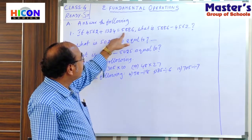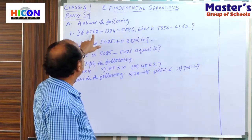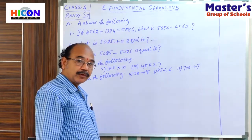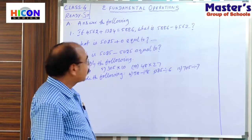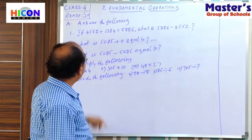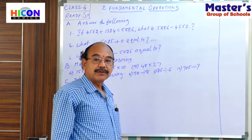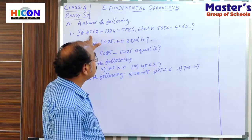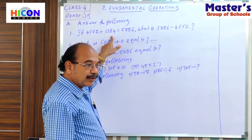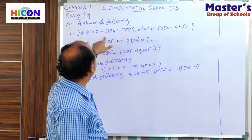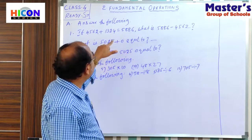Now in the question, sum of the two numbers minus the first number is there. If we subtract the first number from the sum of the two numbers, then what do we get? We get the second number. That means 1,324. Why? Because the sum of the two numbers is 5,886. From this result, we subtract the first number. If we subtract the first number, then we get the second number.